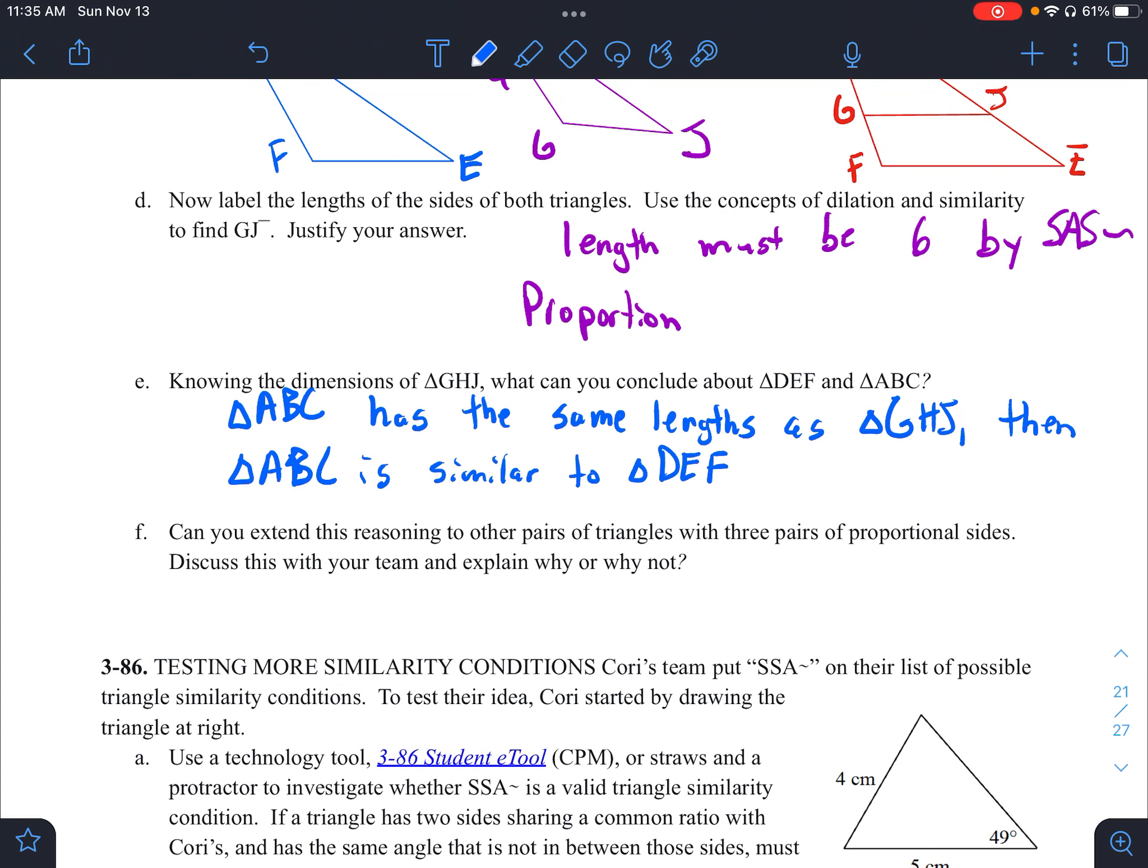So here's what we can conclude. Triangle ABC has the same length as triangle GHJ. Then triangle ABC is similar to triangle DEF. Then lastly here in letter F says, can you extend this reasoning to other pairs of triangles with three pairs of proportional sides discussed with your team. Our conclusion here is, yes, this logic works for all pairs of triangles.